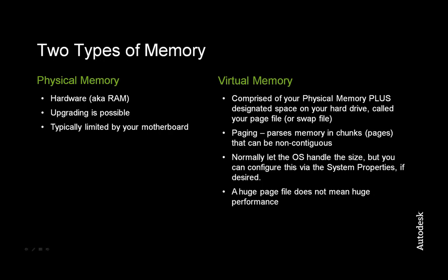Virtual memory is comprised of both physical memory plus the designated space on your hard drive called the page file, or sometimes called the swap file. When using a page file, memory is parsed into chunks that can be non-contiguous. Because the hard drive is always slower than physical RAM, performance is going to take a hit when venturing into this area. The page file size can be set by the user, but it's typically a good idea to let the OS handle this, and that's how it is by default.